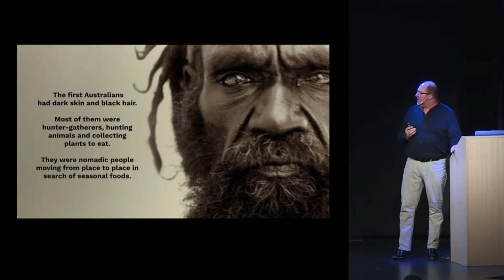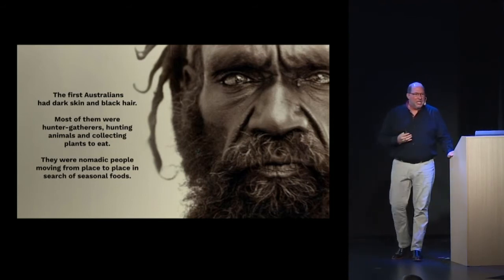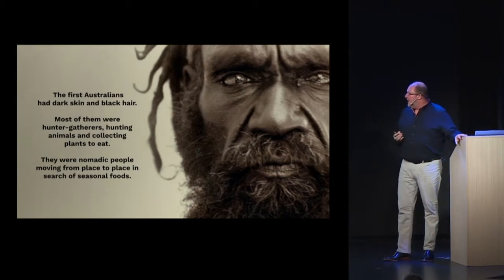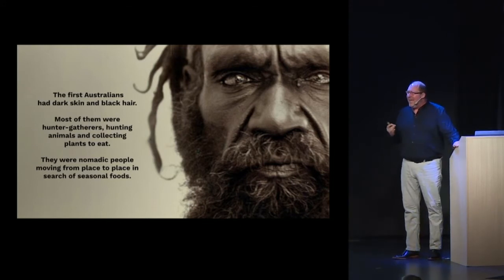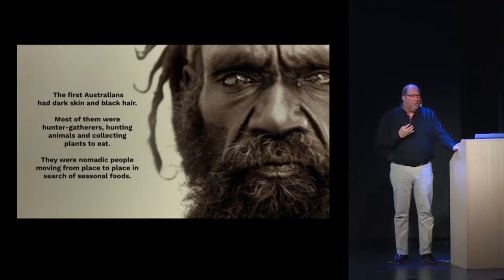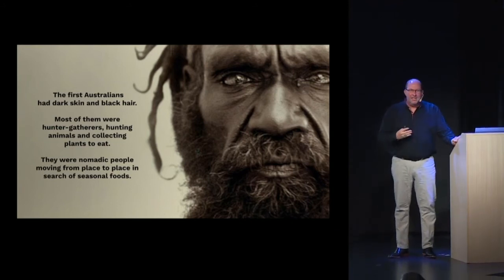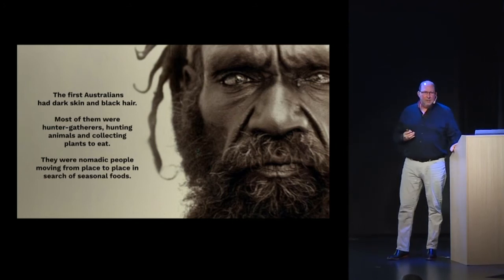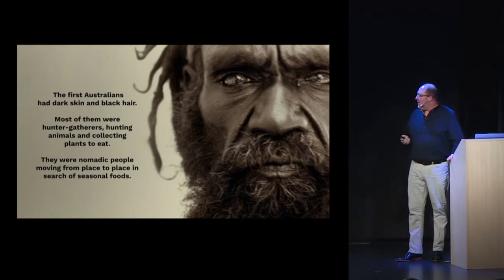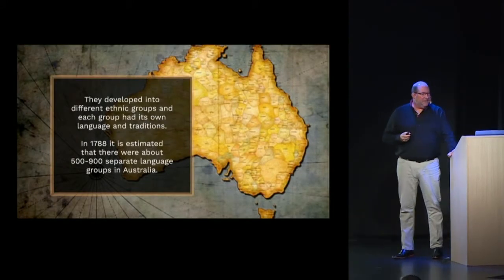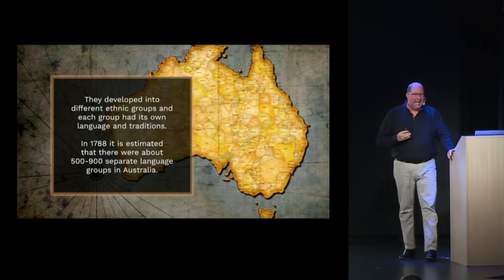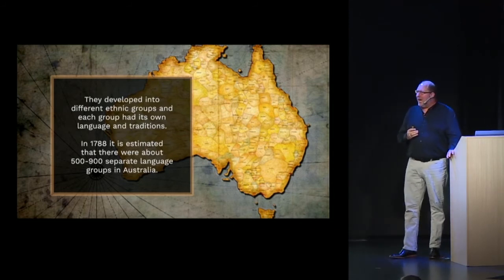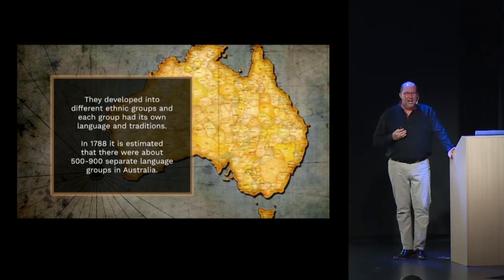The first Australians had dark skin and black hair. Most were hunter-gatherers who followed animal migration and gathered plants along the way — nomadic peoples, similar to what we'd find today in the Amazon Basin. They developed into different ethnic groups, and each group had its own language and traditions. In 1788, when the British first started arriving and colonizing, it's estimated there were 500 to 900 separate language groups in Australia.